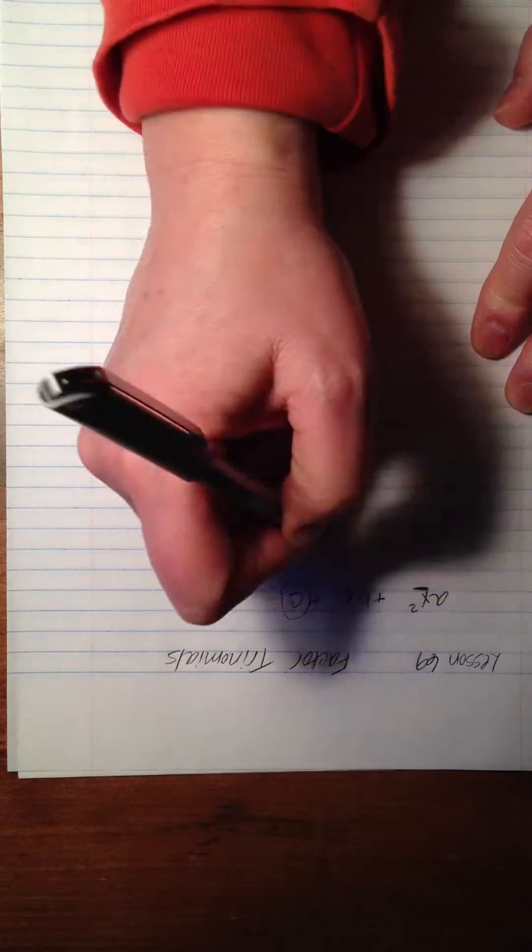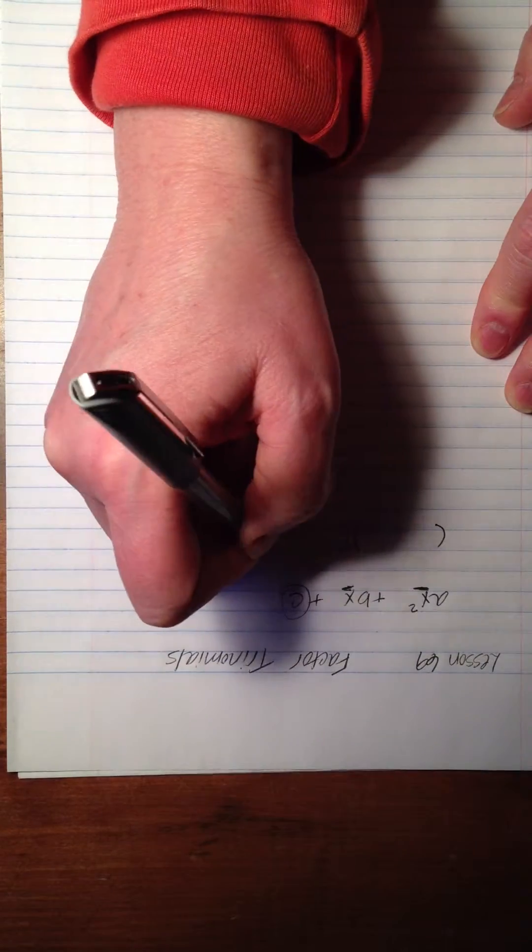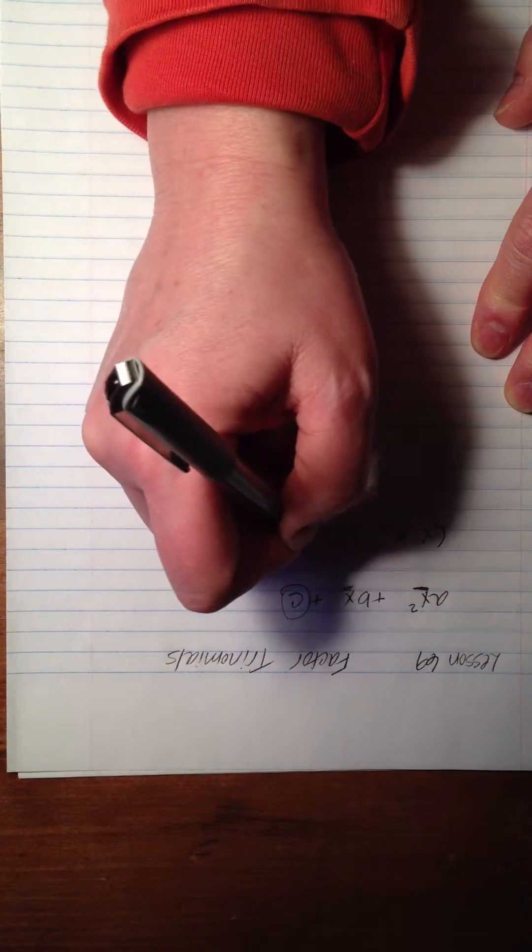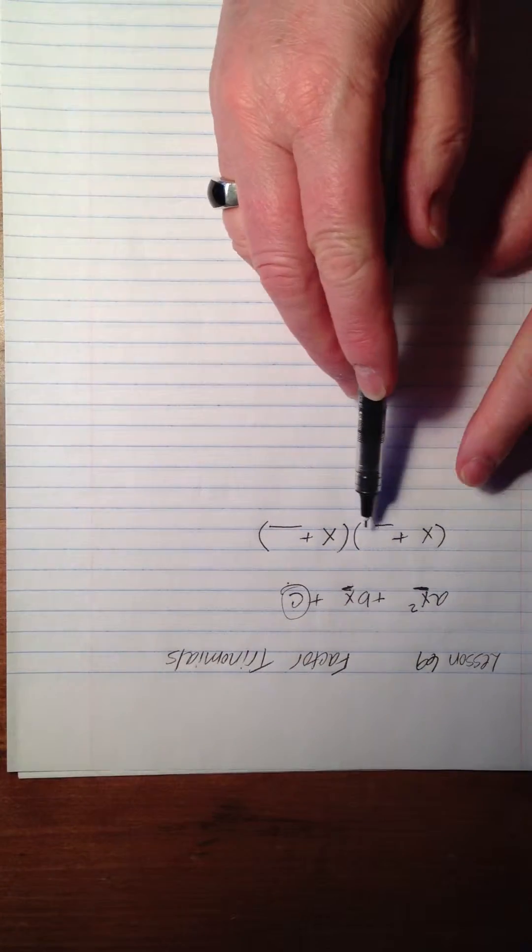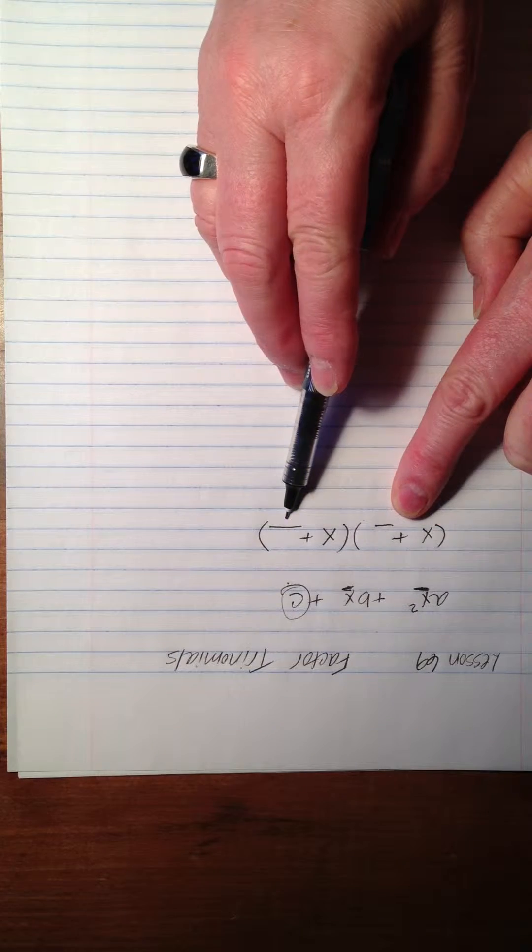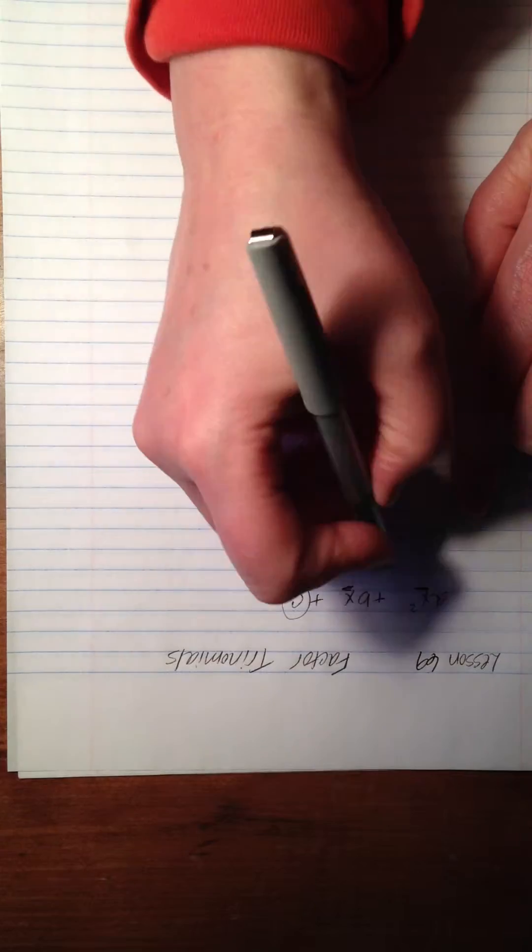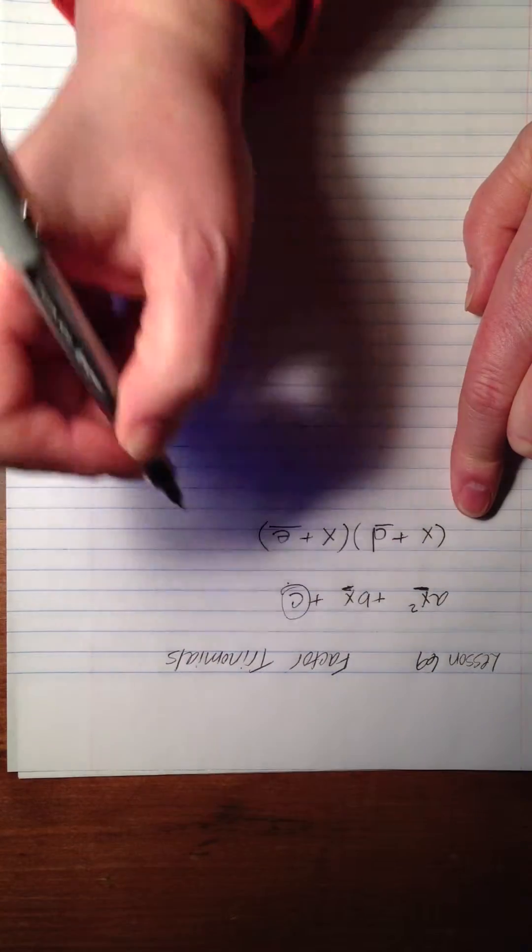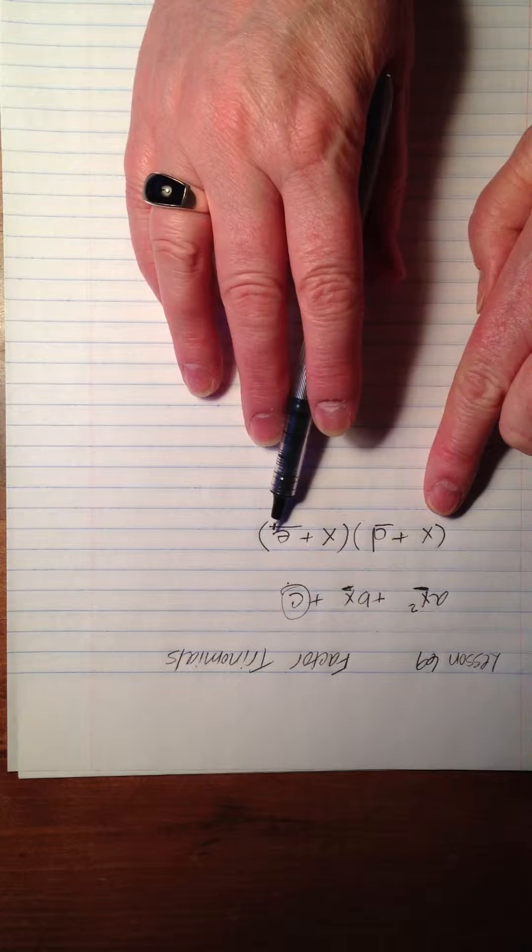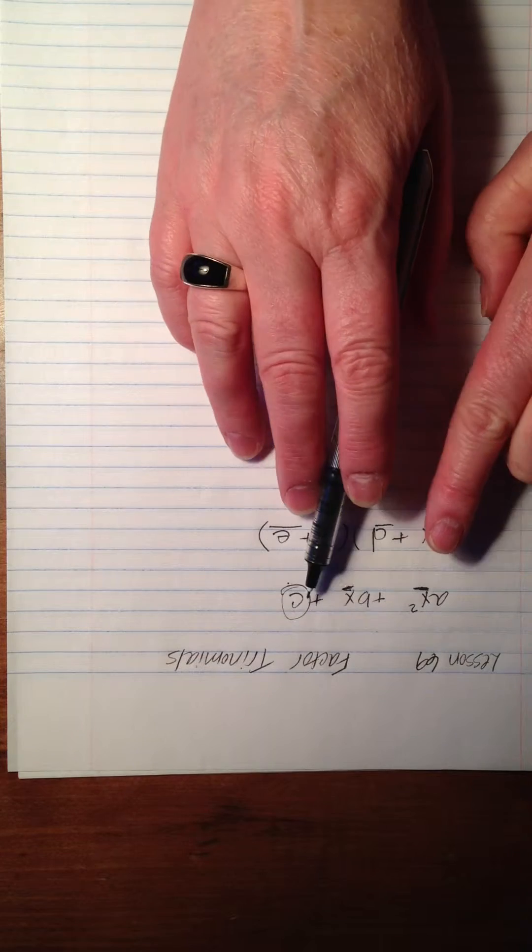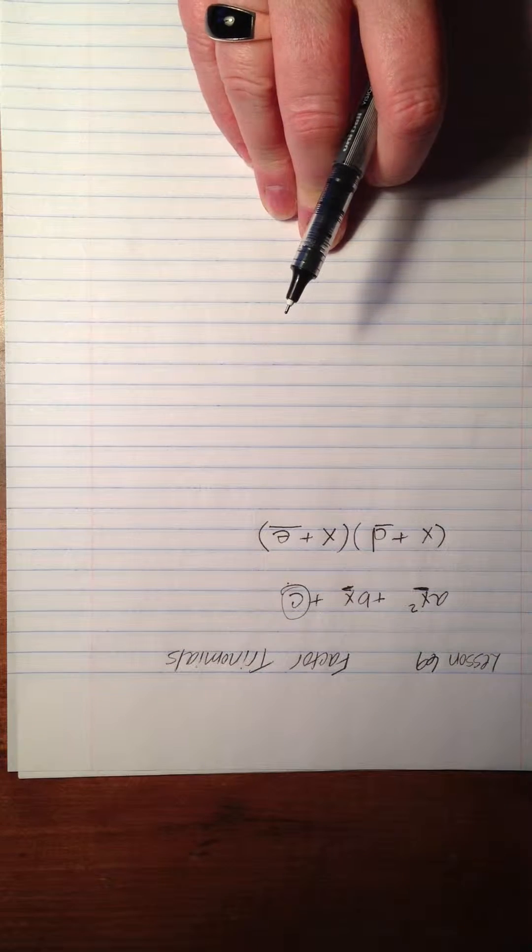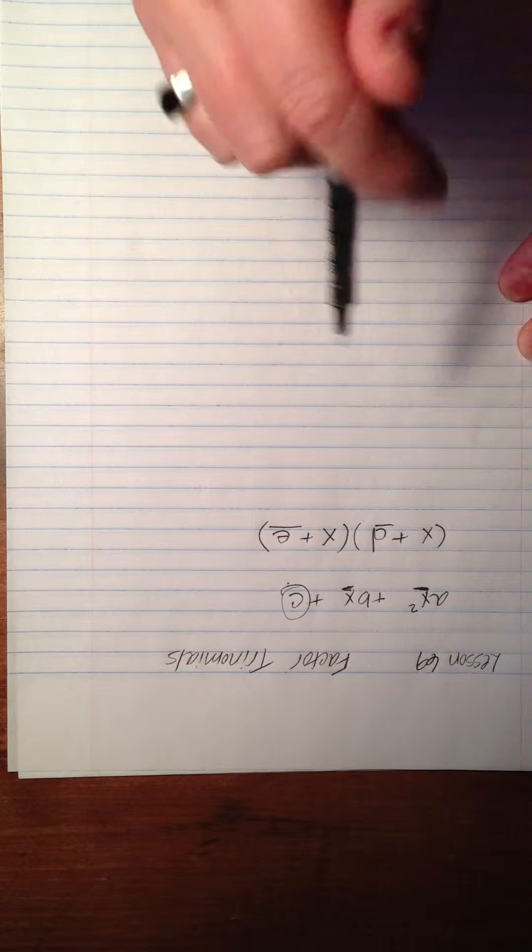Trinomials are formed when we have a pair of binomials that we're multiplying together. They can be plus or minus, but we always have a pair of binomials that have an x plus or minus a plain number. It doesn't necessarily correspond to those numbers, so I'm going to put a d and an e here just to show you that they're different numbers. But what we've learned how to do is multiply the binomials to find the trinomial. Now we're going to learn to go backwards.